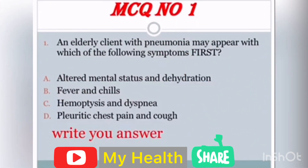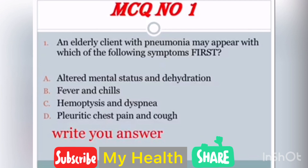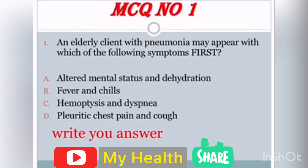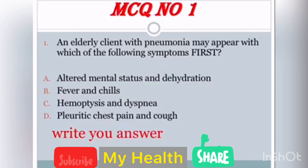MCQ number 1: An elderly client with pneumonia may appear with which of the following symptoms first? A) Altered mental status and dehydration, B) Fever and chills, C) Hemoptysis and dyspnea, D) Pleuritic chest pain and cough. You can write your answer — at the end of this presentation I will tell you the answer with rationale.